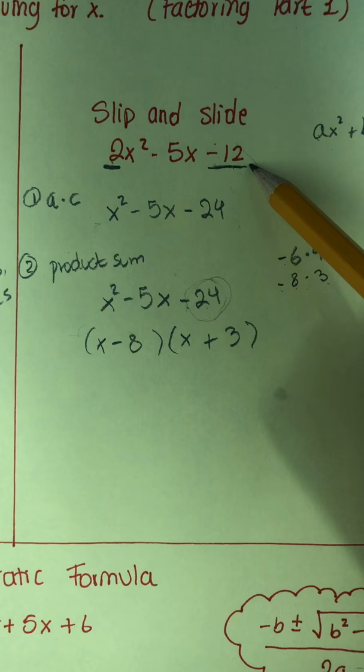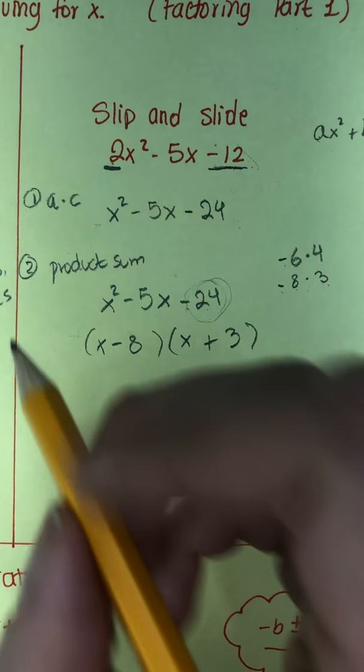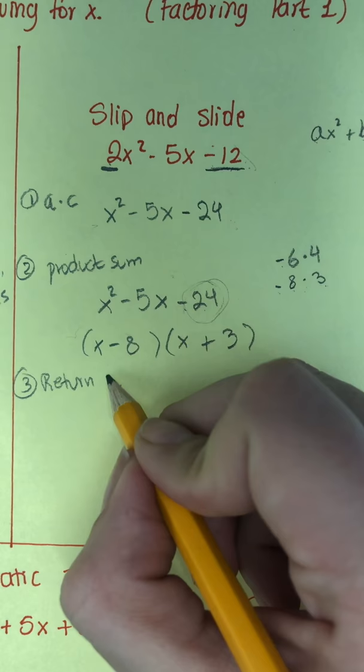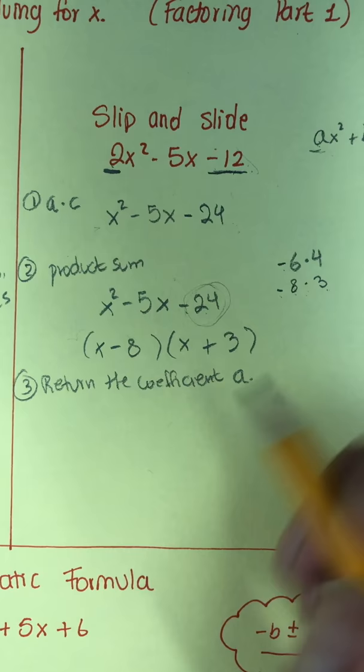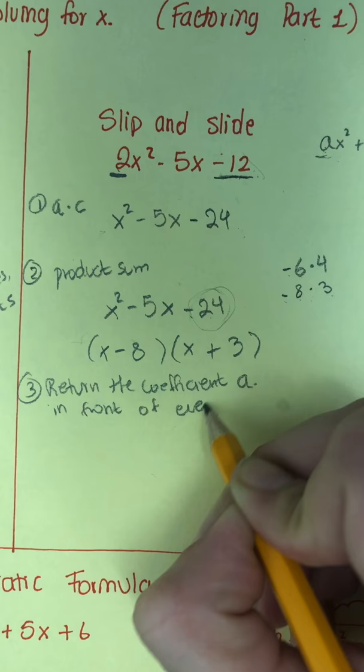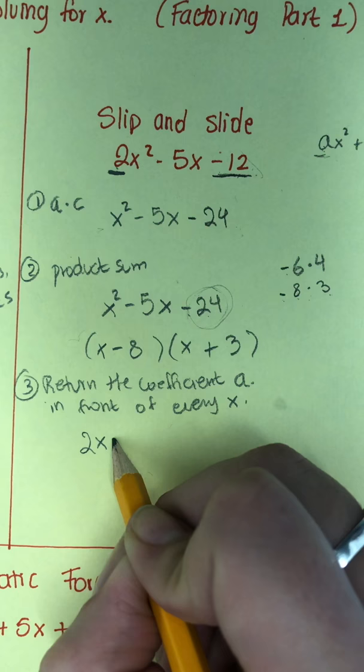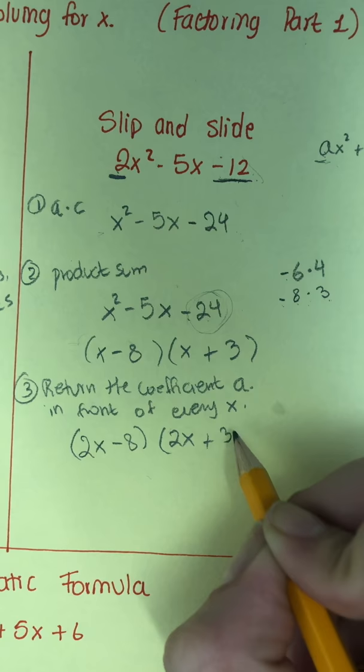Now remember how at the very beginning we multiplied that 2 times that 12? Because I kind of took it away at the beginning, I have to bring it back. So my third step is to return the coefficient a, which is the first coefficient here, in front of every x. If I do that, then I'm going to put a 2 in front of that x and a 2 in front of the other x. Fourth step, we're going to simplify.